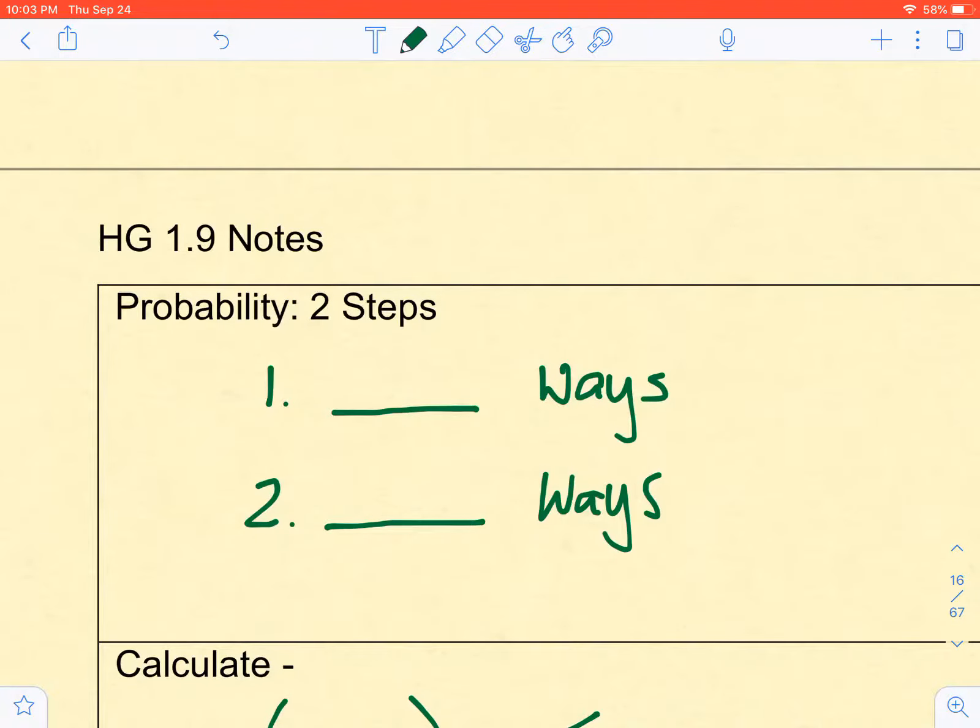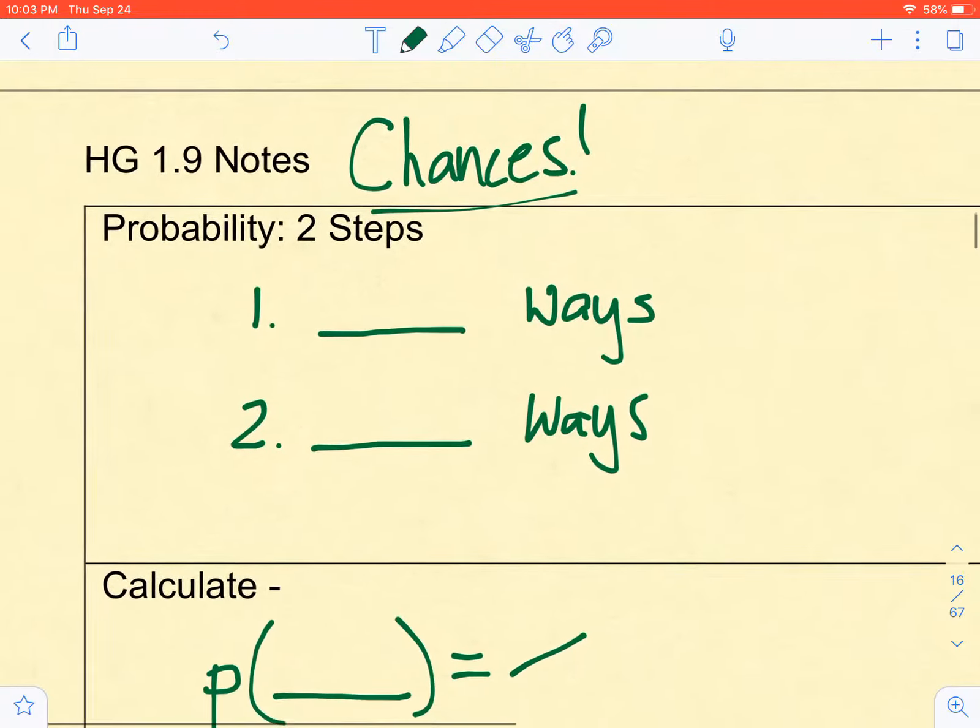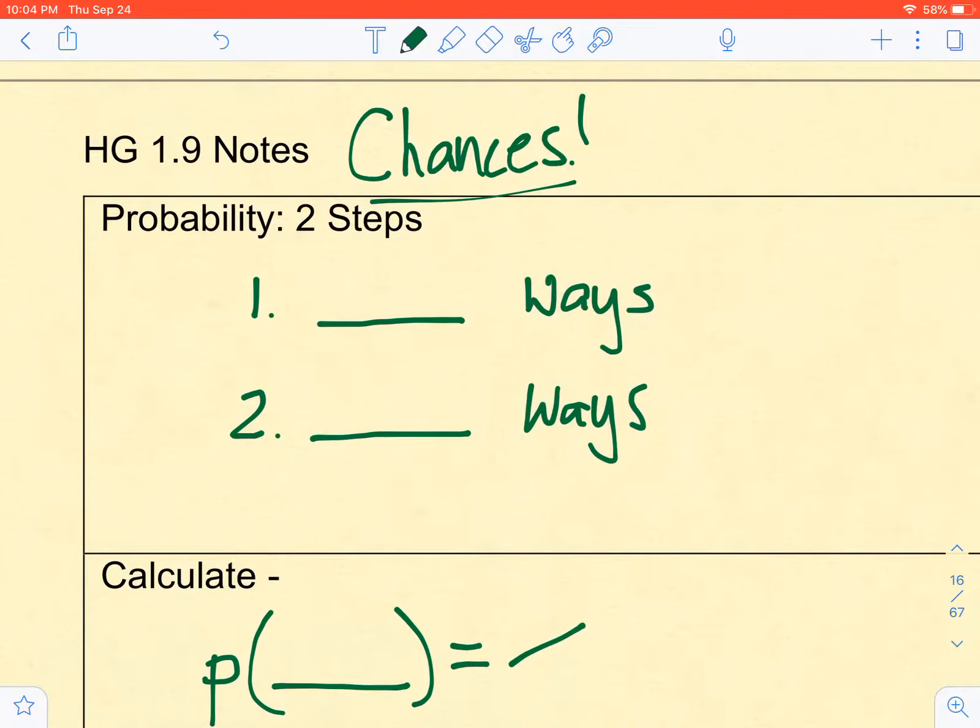This refers to what are your chances. In other words, we're discussing probability. Reminder, when you do that, there are two steps: find the number of winning ways, and find the number of total ways.